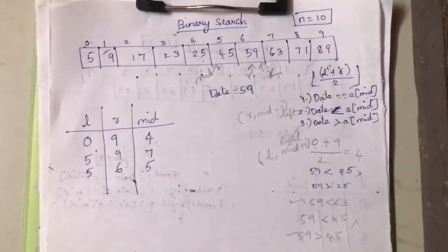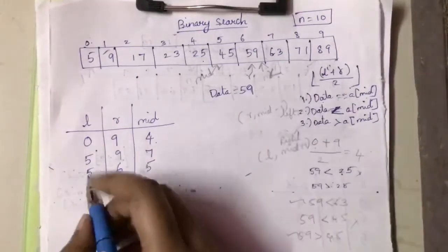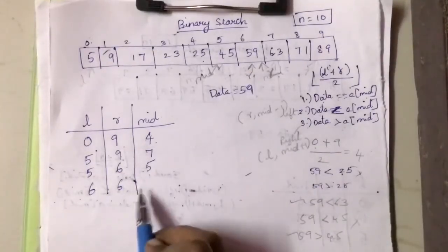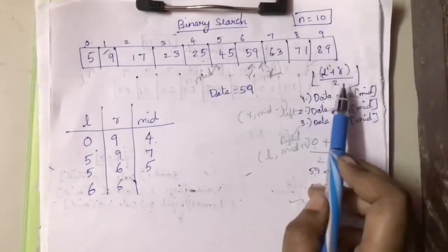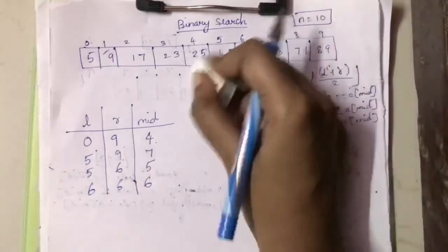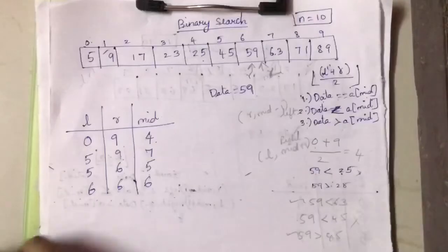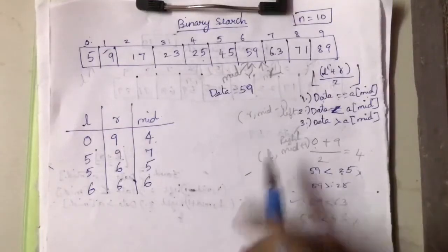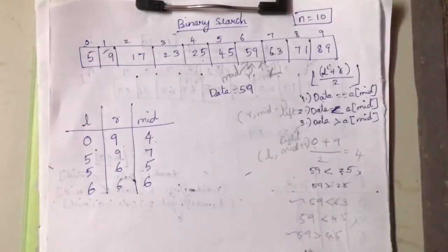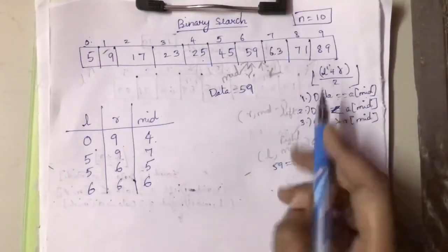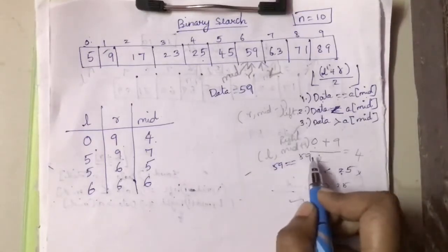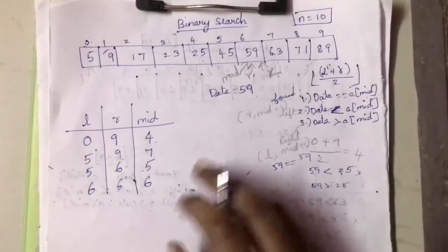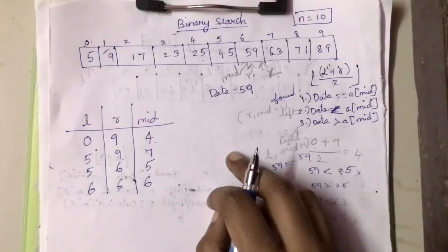Now l is 6 and r is also 6. Calculating mid: 6 plus 6 divided by 2 equals 6. Mid is pointing to index 6. Checking the condition: data equals a[mid]? Data is 59 and a[mid] is also 59 — this condition is true, so we print that the element is found. This is how we search for elements using binary search.